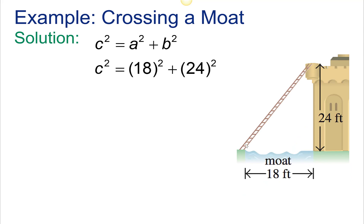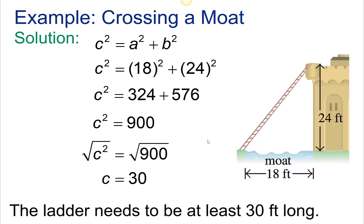C squared, which is the length of the ladder, equals 18 squared plus 24 squared. Square those numbers, add them together, then take the square root. The ladder has to be at least 30 feet long to reach the top of that wall.